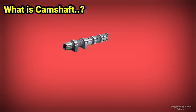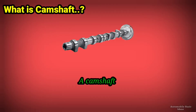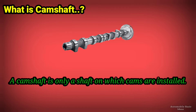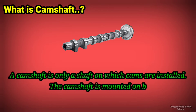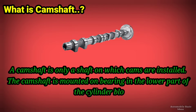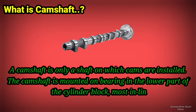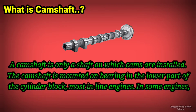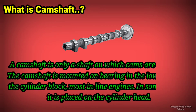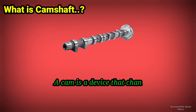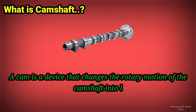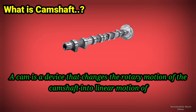A camshaft is a shaft on which cams are installed. The camshaft is mounted on bearings in the lower part of the cylinder block in most inline engines. In some engines, it is placed on the cylinder head. A cam is a device that changes the rotary motion of the camshaft into linear motion of the follower.